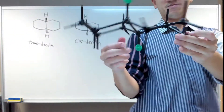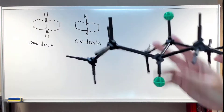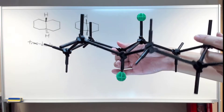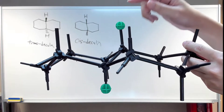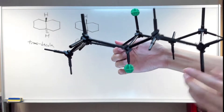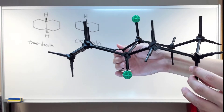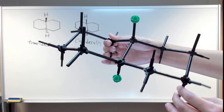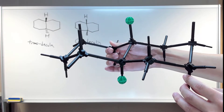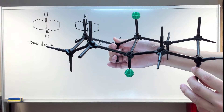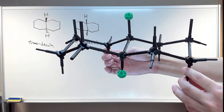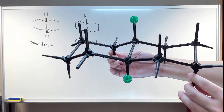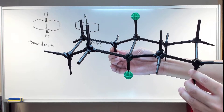I'm going to change my perspective a bit so that you can see. Here you can see that this is indeed transdecaline — the green sphere representing H is pointing up, and the other H is pointing down. I'm going to rotate the structure so you can clearly see the perspective. You can see the two chair conformations lying very nicely side by side. Please pause the video here and try to draw this particular structure out.